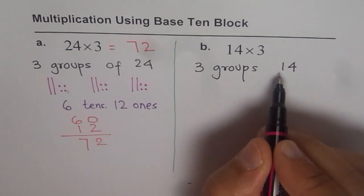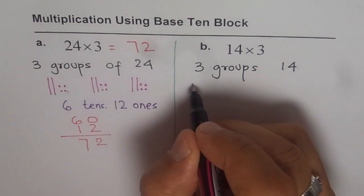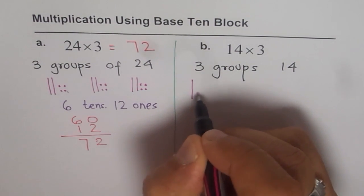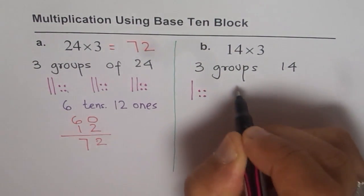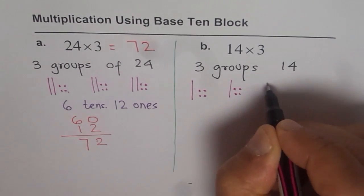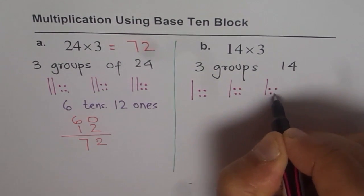And we have to make 3 groups of 1 ten and 4 ones. Let's do it. So, it's 1 ten and 4 ones. 3 groups. 1 ten, 4 ones. 1 ten, 4 ones. Correct?